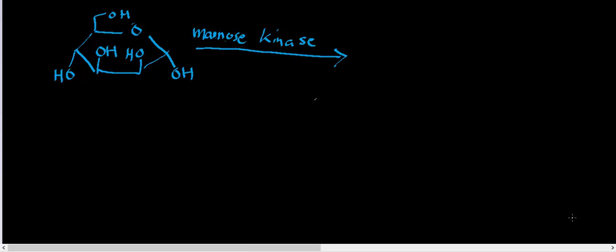But mannose is one of those monosaccharides that enters before PFK, so mannose is under the same control that glucose is under. And as we'll see, mannose enters in a point that's different than galactose, it's different from glucose.